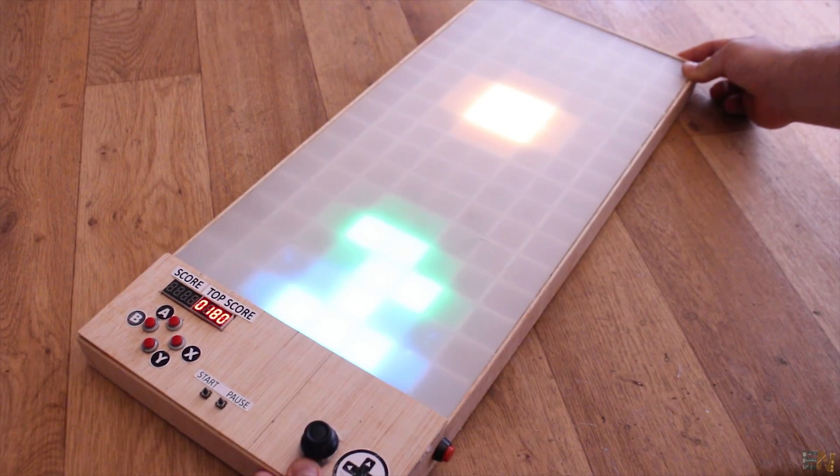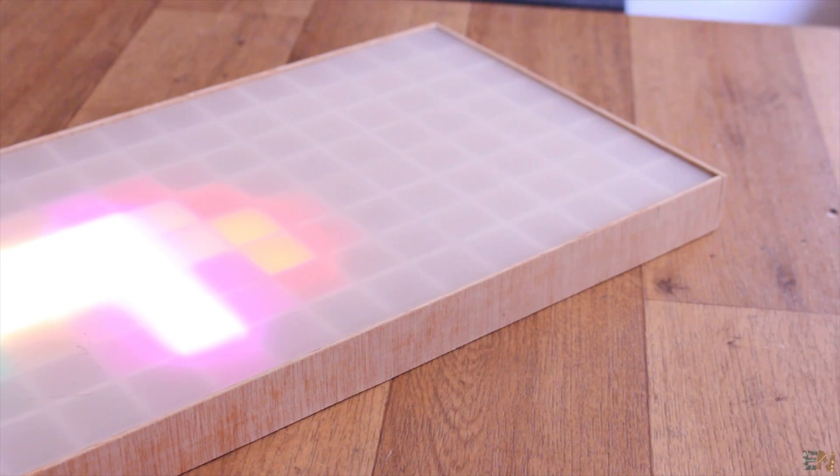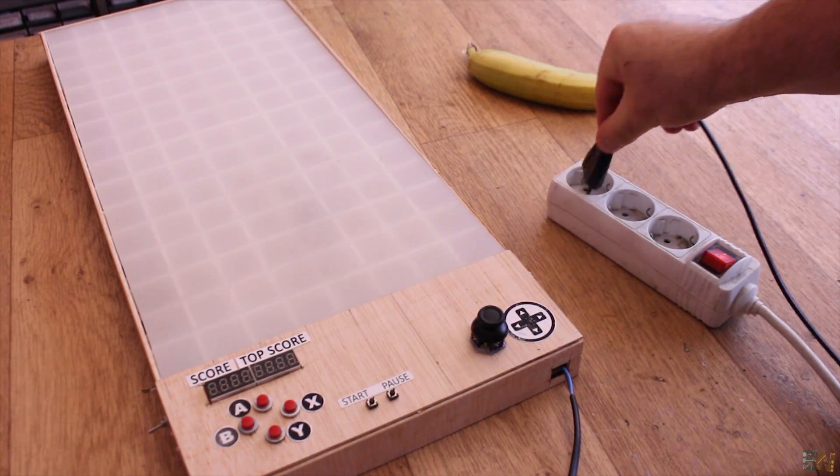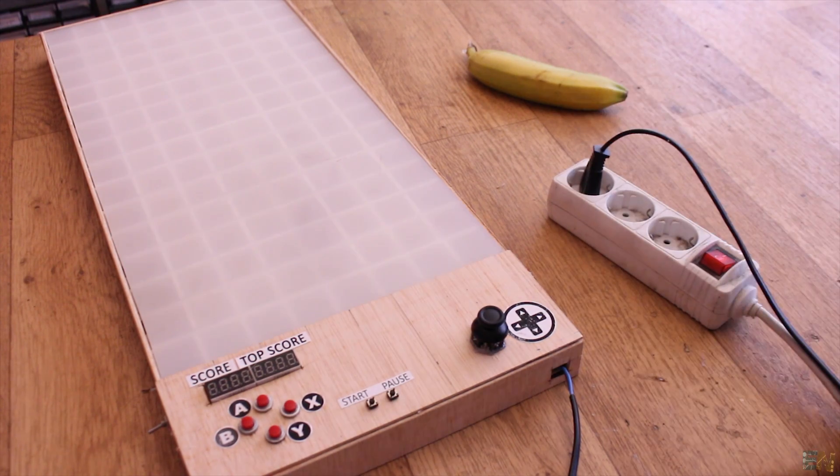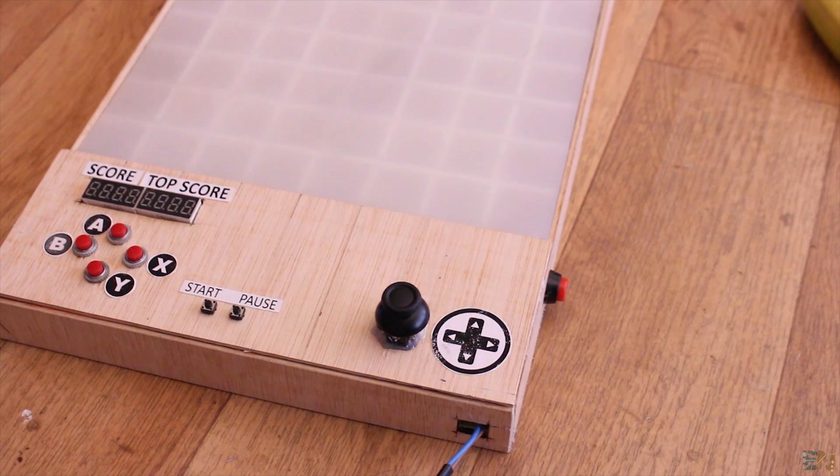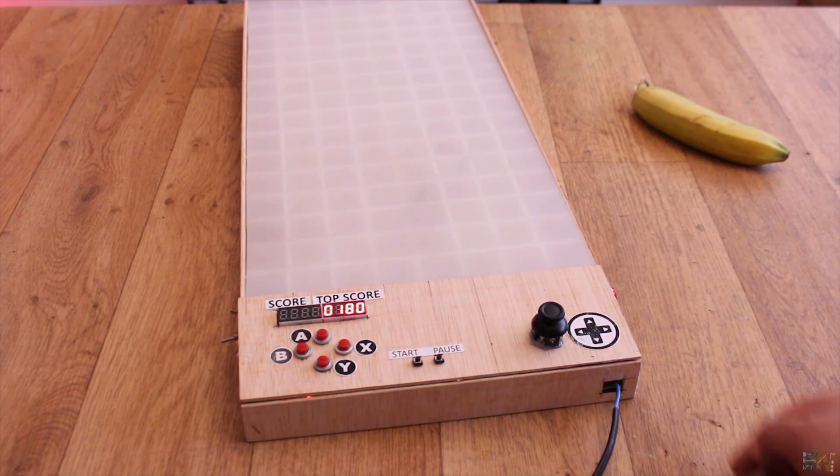What's up my friends, welcome back. Let's take a look at the finished Tetris table and then see how to build it. It can be powered from the main outlet because we have a small power supply inside for 5V. So press the on button and it will start the game and the Tetris theme song will play as well.